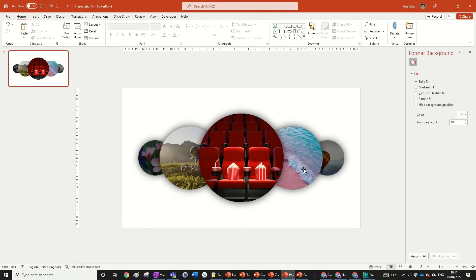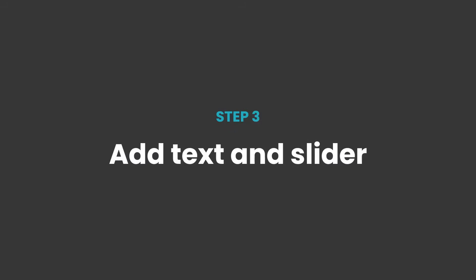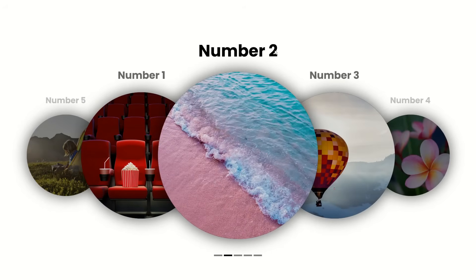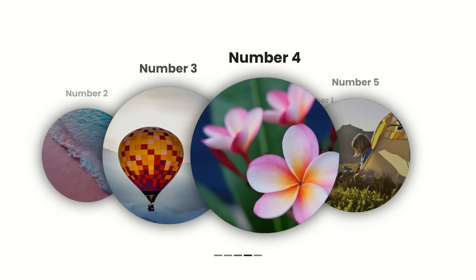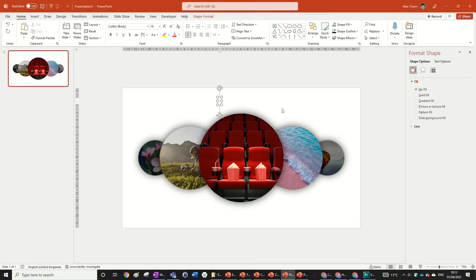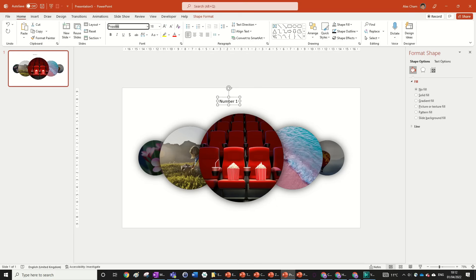We've got our images cropped, formatted, and located. Now it's time to add text and a bottom slider. Go back to the slide, add a text box, and write 'Number One' — or whatever you want. Change the font to Poppins, bold it, and size it up.